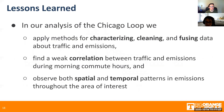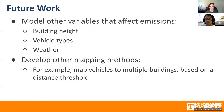In our analysis of the Chicago Loop, we applied methods for characterizing, cleaning, and fusing data about traffic and emissions. We found a weak correlation between traffic and emissions during morning commute hours, and we observed both spatial and temporal patterns in emissions throughout the area of interest. In future work, we could model other variables that affect emissions, such as building height, vehicle types, and weather. We could also develop other mapping methods, such as methods that map vehicles to multiple buildings based on a distance threshold.